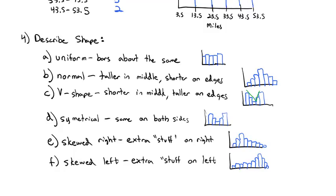So that's histograms. We can draw them to show the shape of the data. We can describe them as uniform, normal, v-shaped, skewed, symmetrical. Really can help us visualize what our data set looks like.